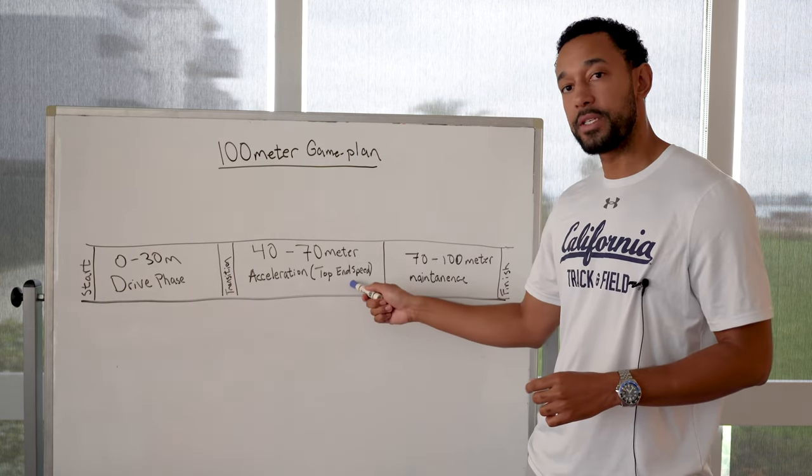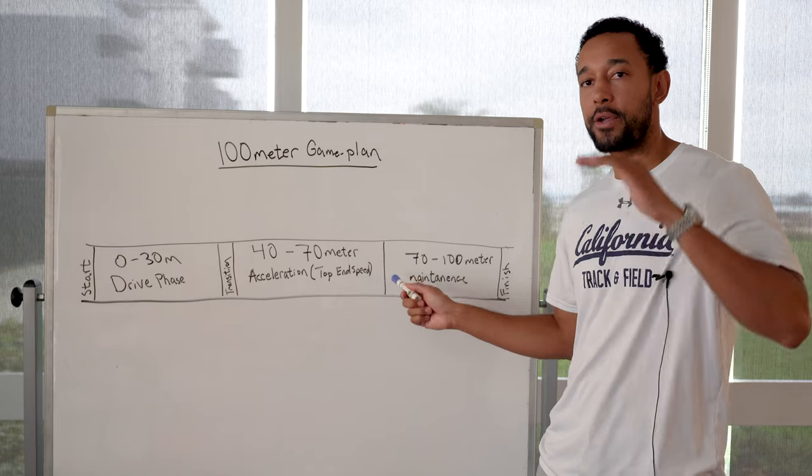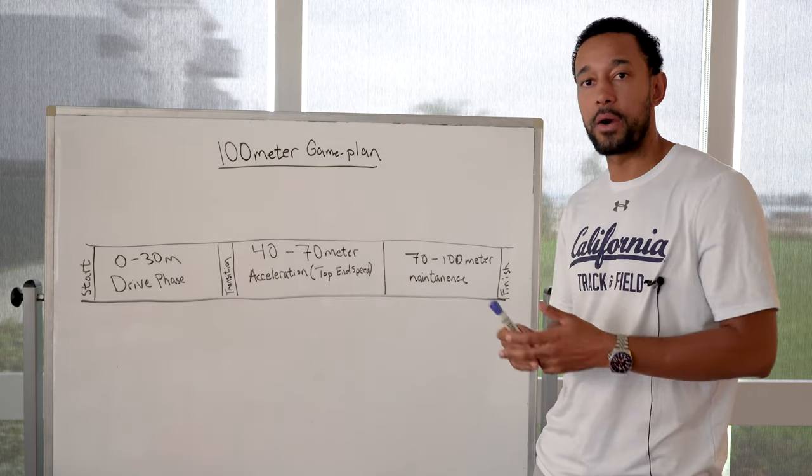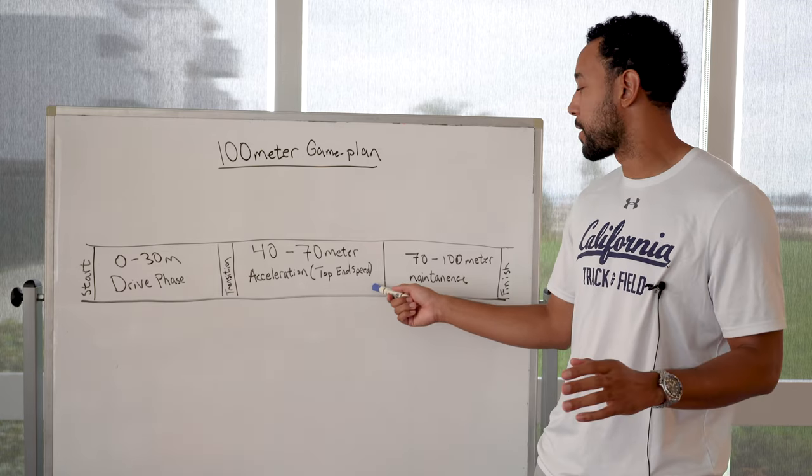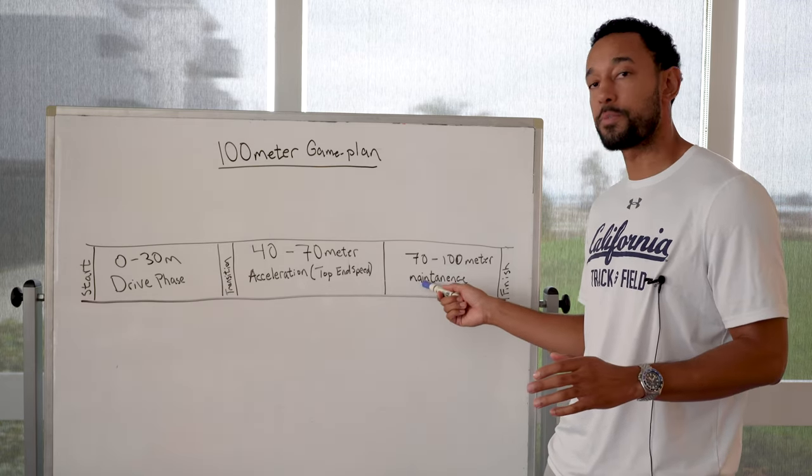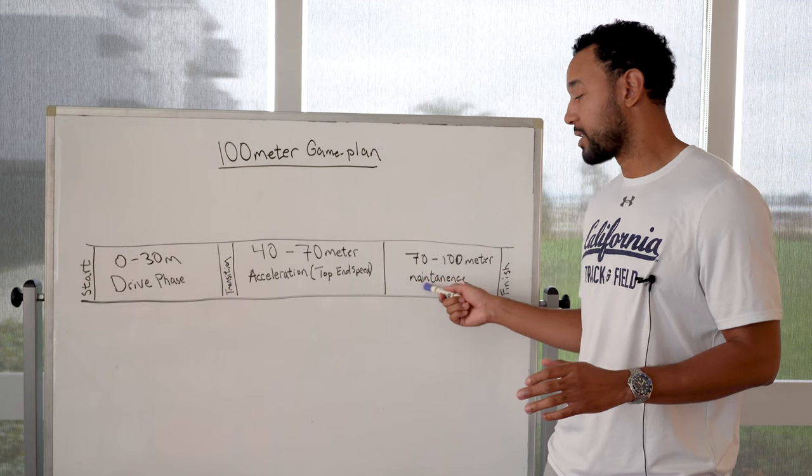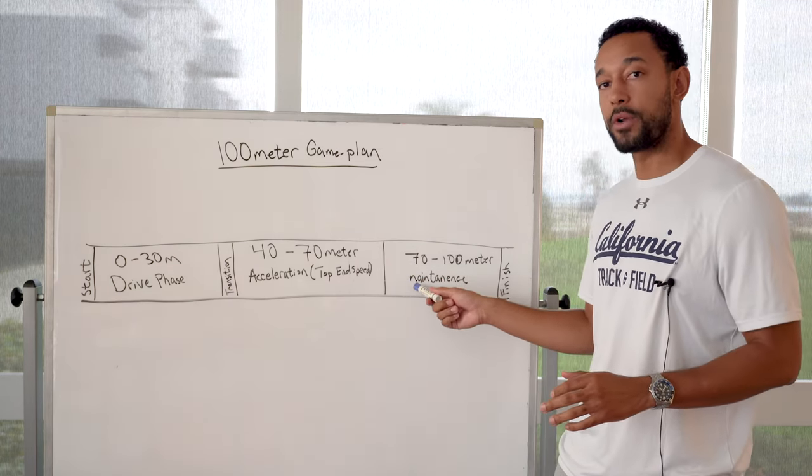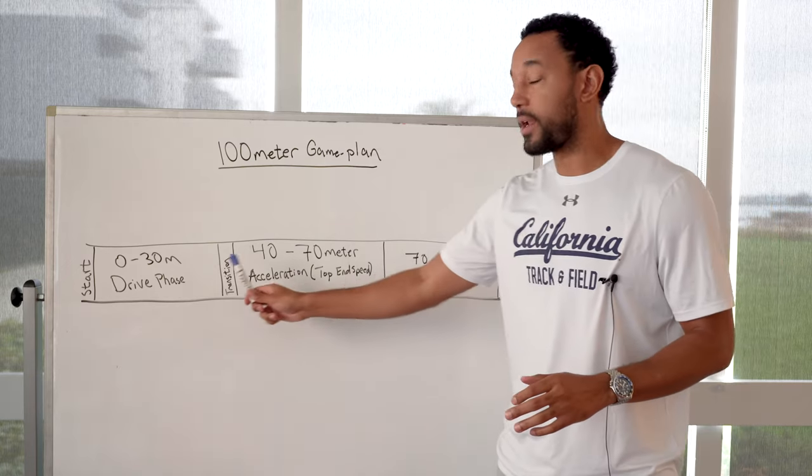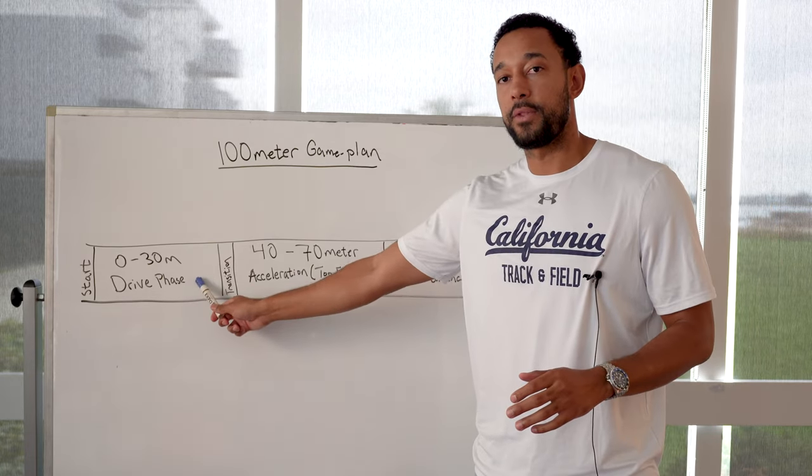This is called top end speed for a reason. From here on, you're no longer at your top end speed. If I had a speed gun, you'd be hopefully 20 something miles per hour here. And then you're slowly going to decrease your speed. Then whoever wins this part is the person that slows down the least. And the person that's going to win this part is going to have stayed patient in their drive phase.